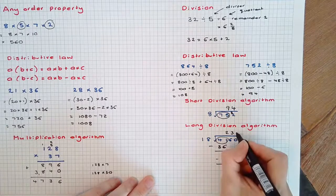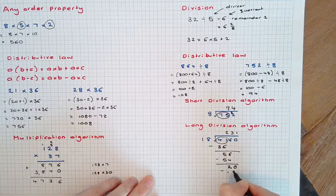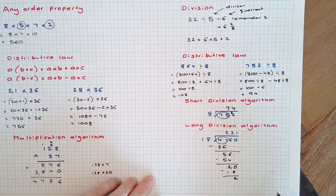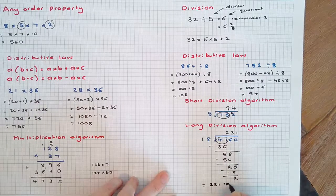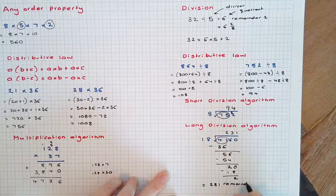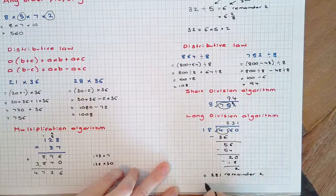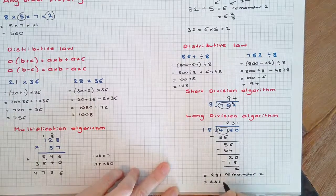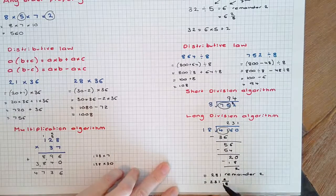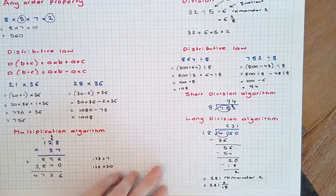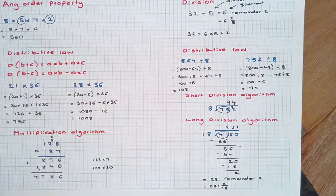18 goes into 20 once, with 2 remainder. So the final answer is 231 remainder 2, or 231 and 2/18ths. That's the long division algorithm.